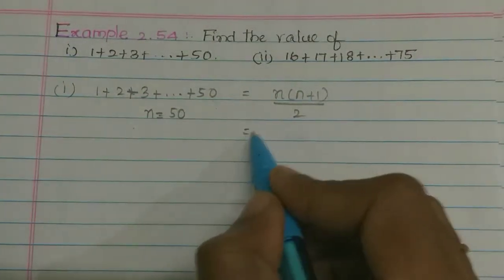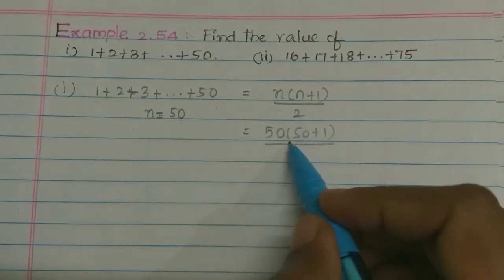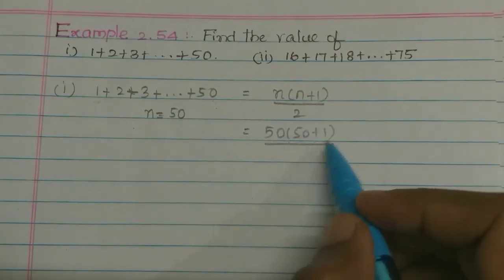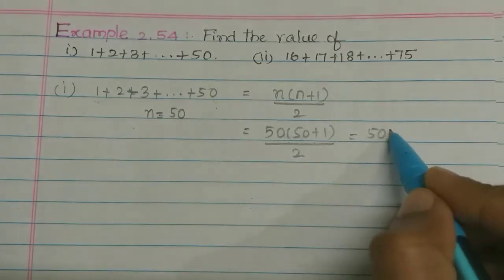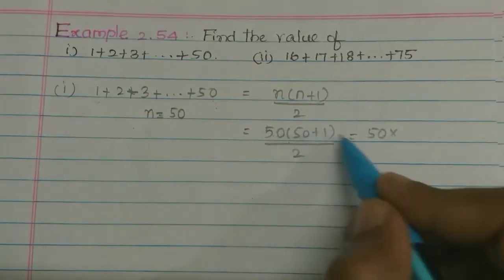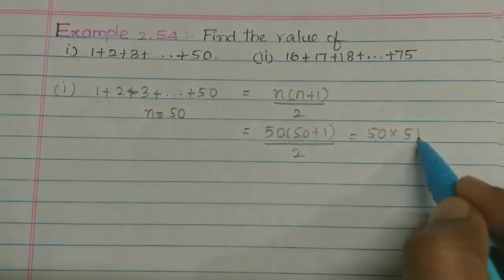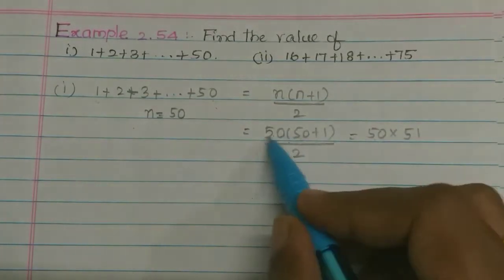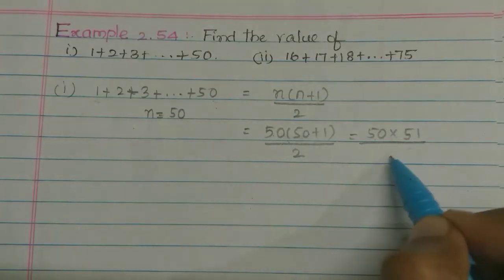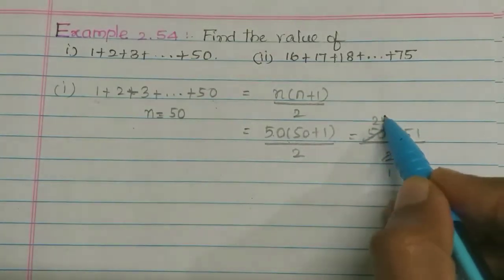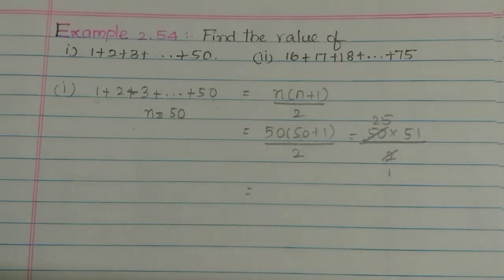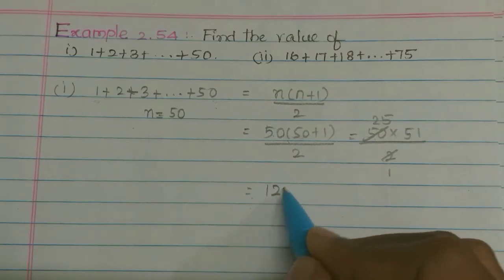Okay, so N is equal to 50. That is 50 into 50 plus 1 divided by 2. So this gives us 50 into 51 divided by 2. The 50 and 2 cancel to give 25, so 25 into 51 is equal to 1275.